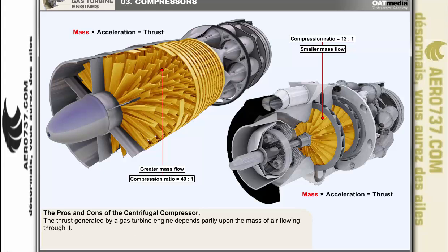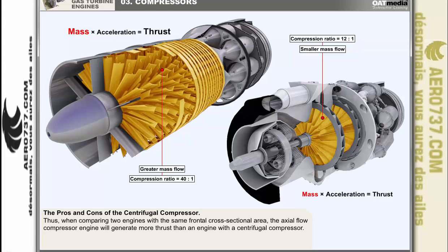Since the amount of thrust generated by a gas turbine engine depends partly upon the mass of air flowing through it, it can be demonstrated that when comparing two engines each having the same frontal cross-sectional area, the engine which has an axial flow compressor will generate more thrust than the engine with a centrifugal flow compressor.